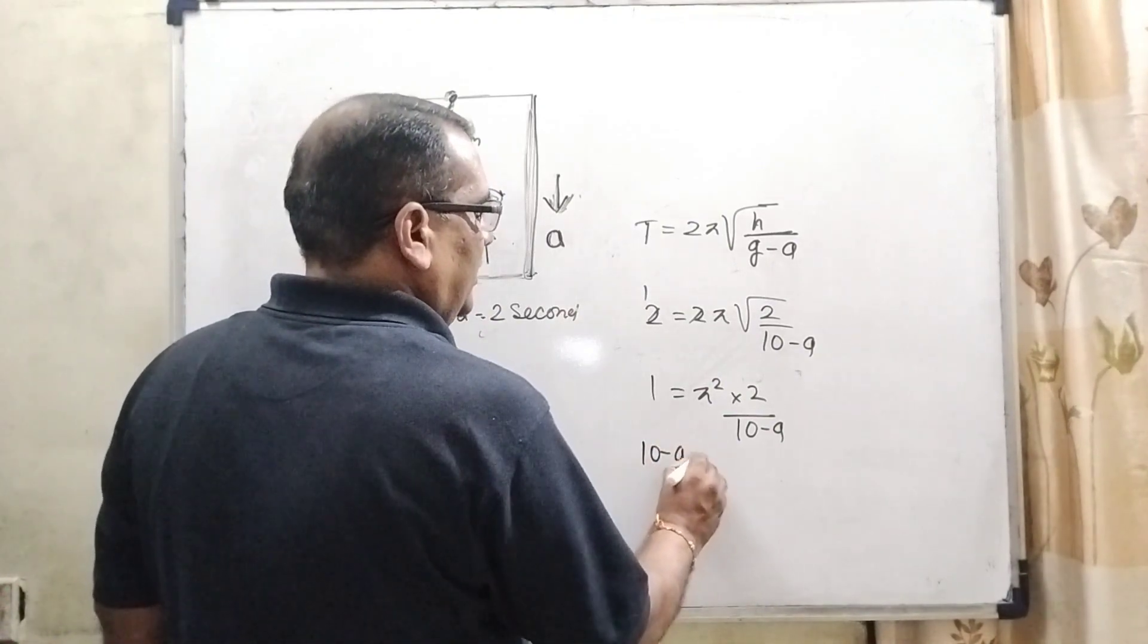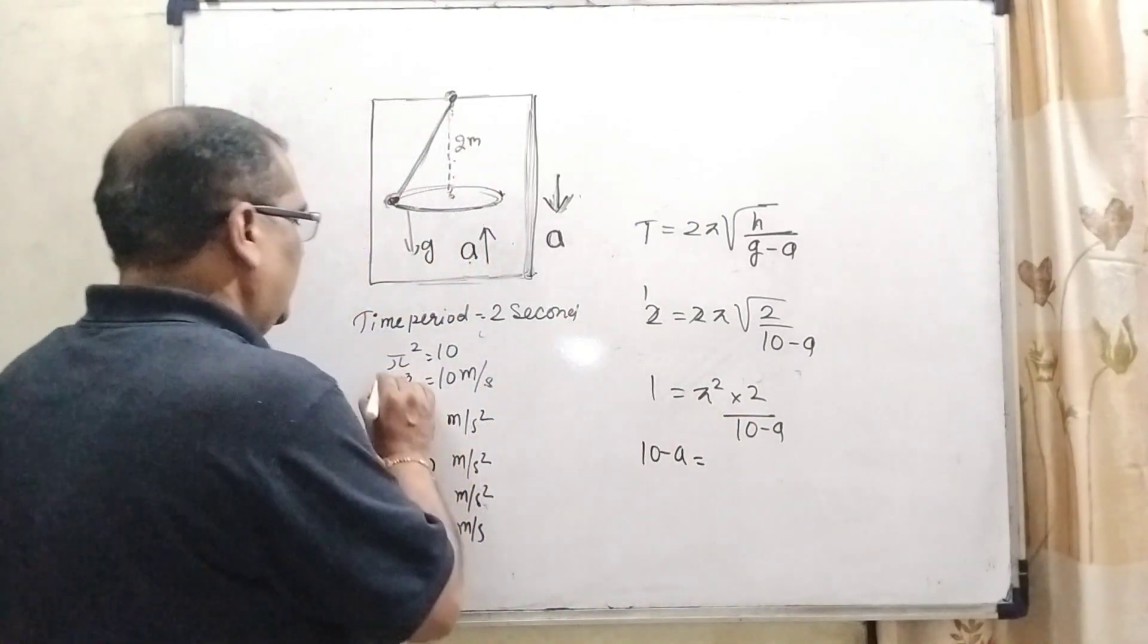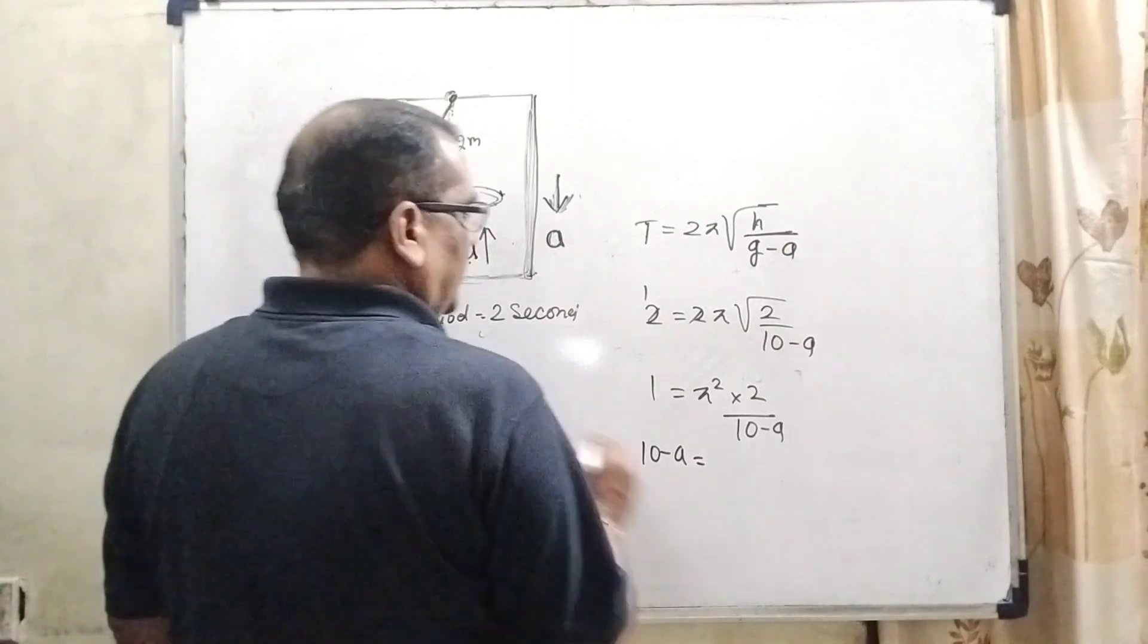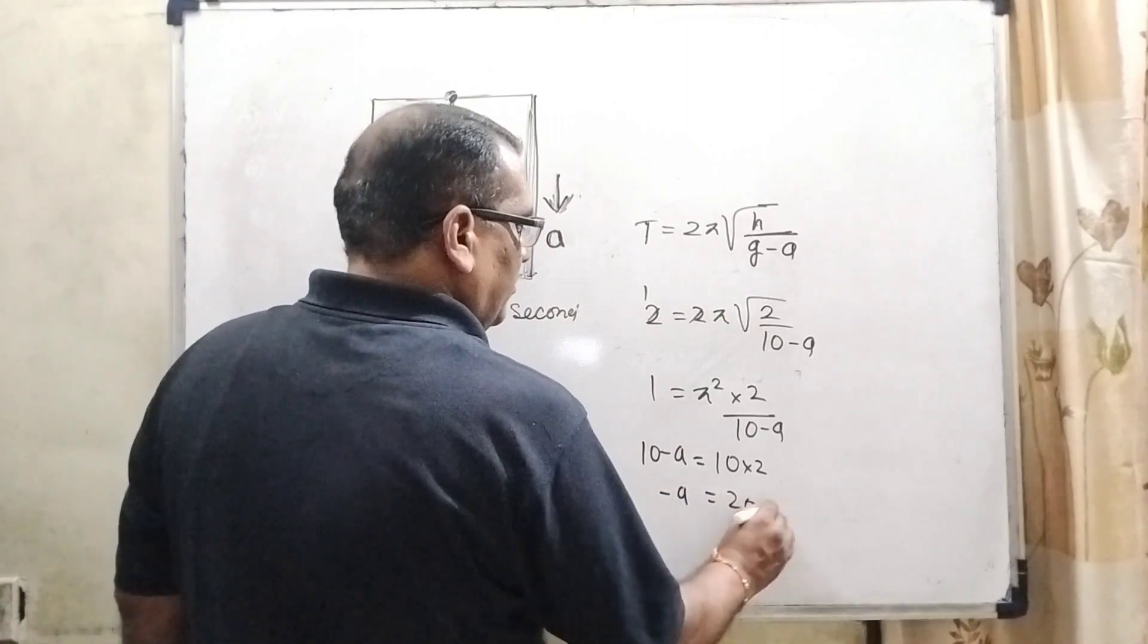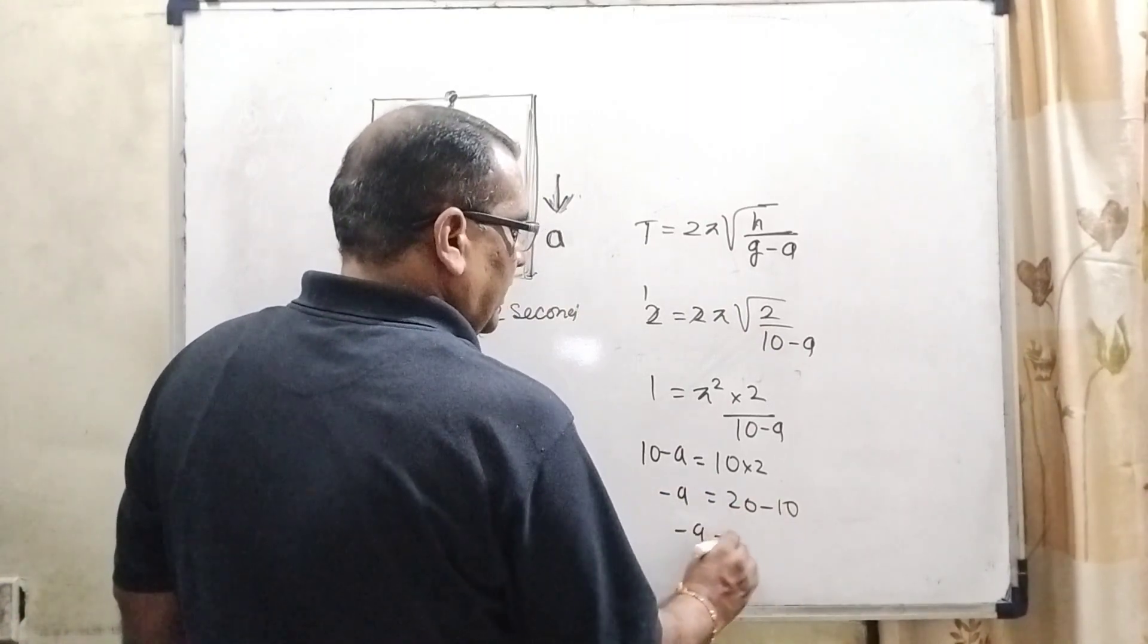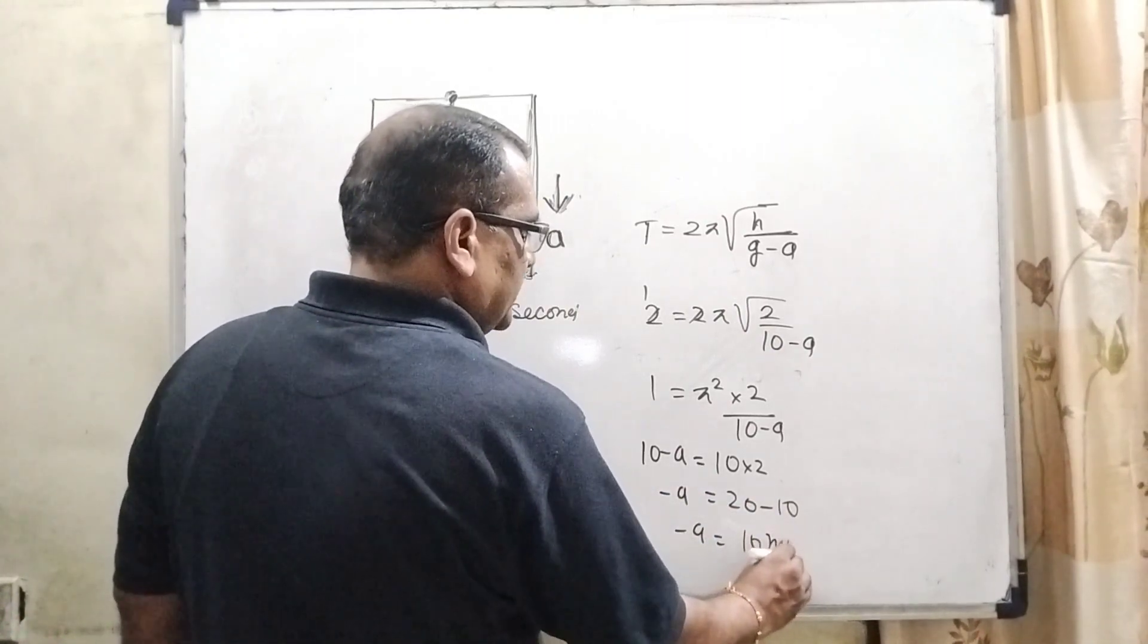Simplifying, 10 minus A equals pi square. Here, given that pi square can be written as 10 into 2, that is 20. Therefore A equals 20 minus 10, and it is 10 meter per second square.